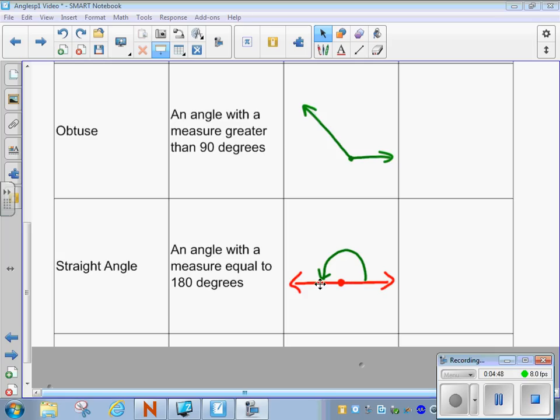And the last word that we'll use for classifying angles is called a straight angle. And that's when it's equal to 180 degrees. So this ray right here, if it came out over here, would be acute, and then right, and then obtuse. But it's been stretched all the way over to the other side, and that makes it 180 degrees.